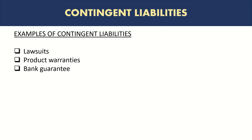Contingent liabilities are liabilities which are dependent on an uncertain future event. A good example is a lawsuit — for example, a lawsuit has been filed against a company but the decision is pending, so the company does not know exactly what the decision will be and how much they will need to pay.